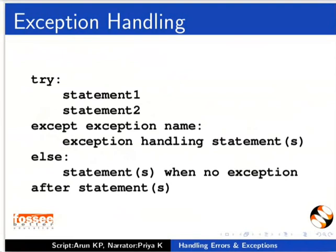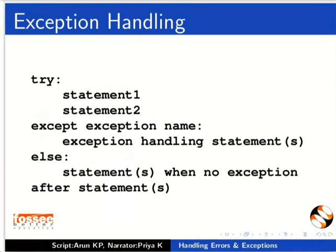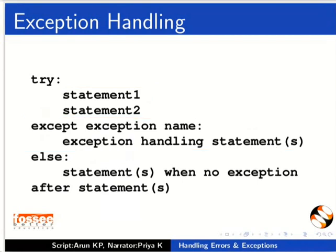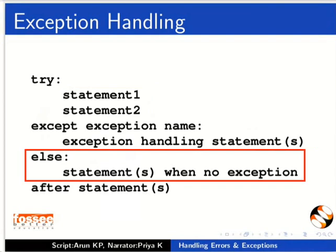Here is the syntax of try/except/else blocks. First, the statements between the try and except keywords are executed. If the statements do not cause any exception, the except clause is skipped. If the statements cause an exception, then the except clause is executed if the exception name matches, and execution continues after the try statement. The code in the else block executes if the code in the try block does not raise an exception.